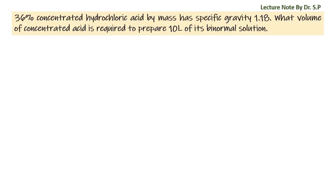We have question 36: concentrated hydrochloric acid by mass has specific gravity 1.18. What volume of concentrated acid is required to prepare 10 liters of its binormal solution?